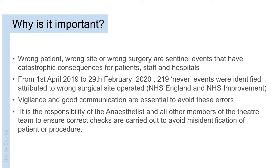Why is the topic of this talk important? Checking a patient's identity might seem like something we routinely do, but if errors are made in the case of wrong patient, wrong site or wrong surgery, these can have catastrophic effects for all those involved — patients, staff and the hospitals. Last year, over the course of 11 months, there were still 219 never events attributed to wrong surgical site being operated on. Taking great care, communicating well and being vigilant in doing these checks is essential. It is both the responsibility of anaesthetists and all other members of the theatre team to ensure these checks are done to avoid any misidentification of the patient or the procedure.